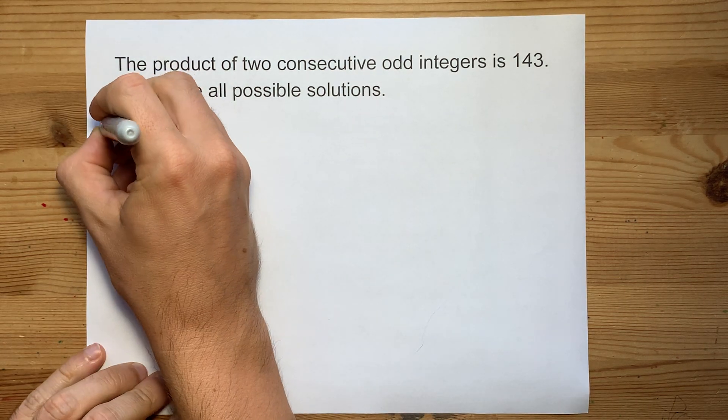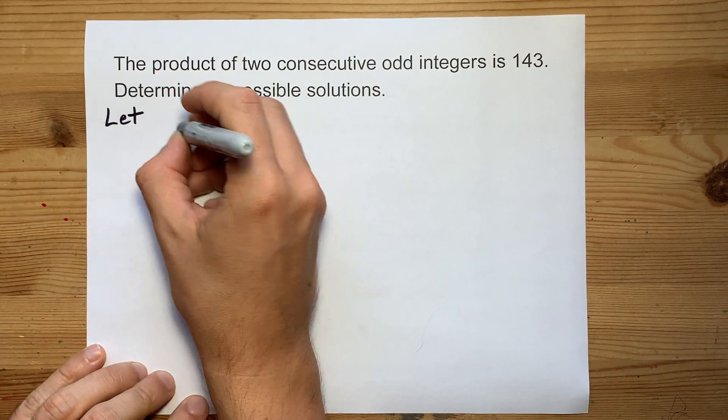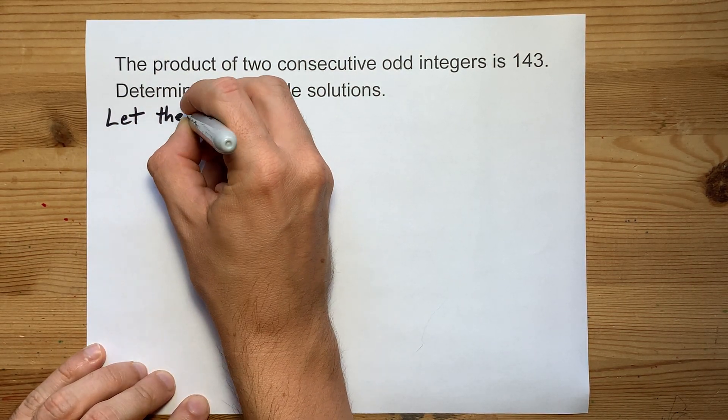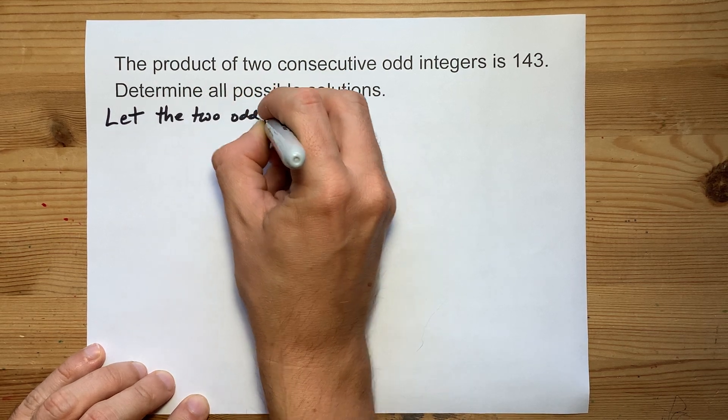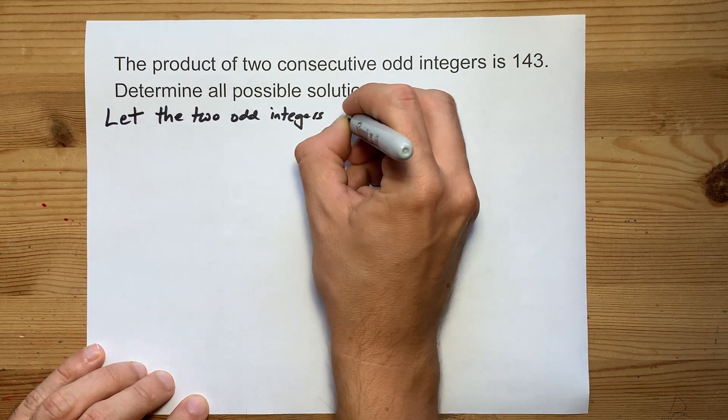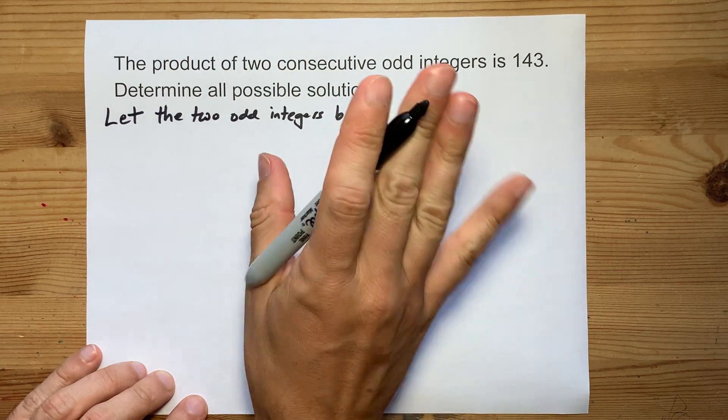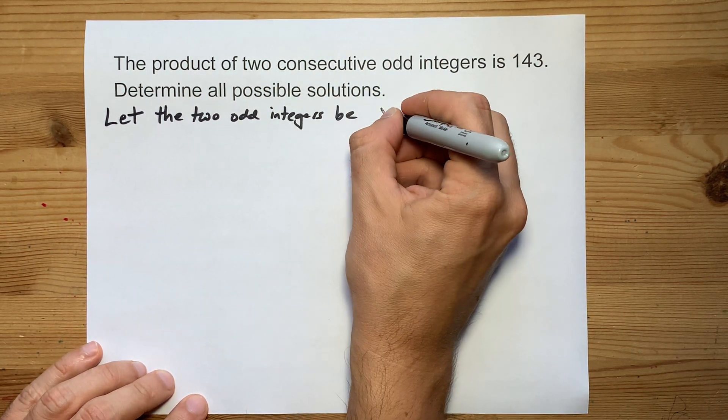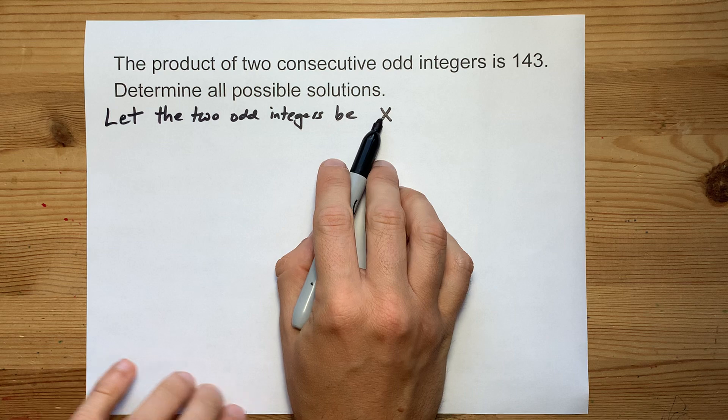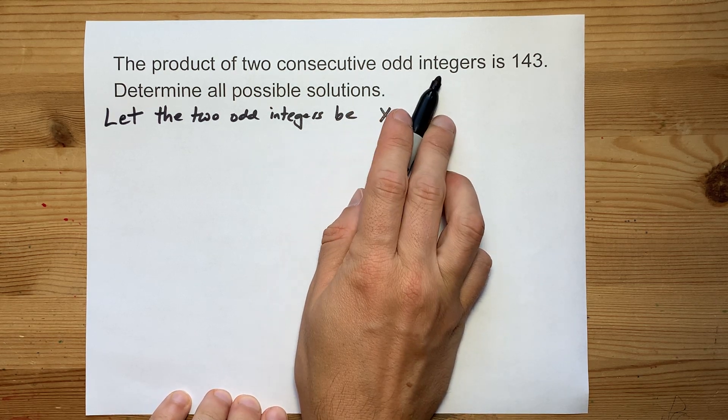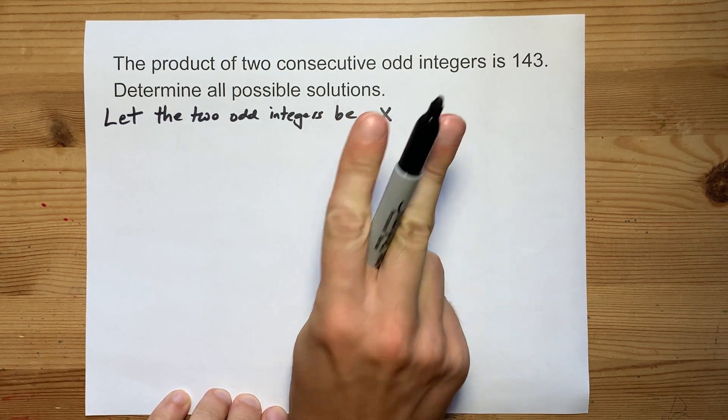You're going to have to declare some variables. Let the two odd integers be x and x plus 2. I'm going to argue you should make the first one x, and the next odd integer is two more than that.